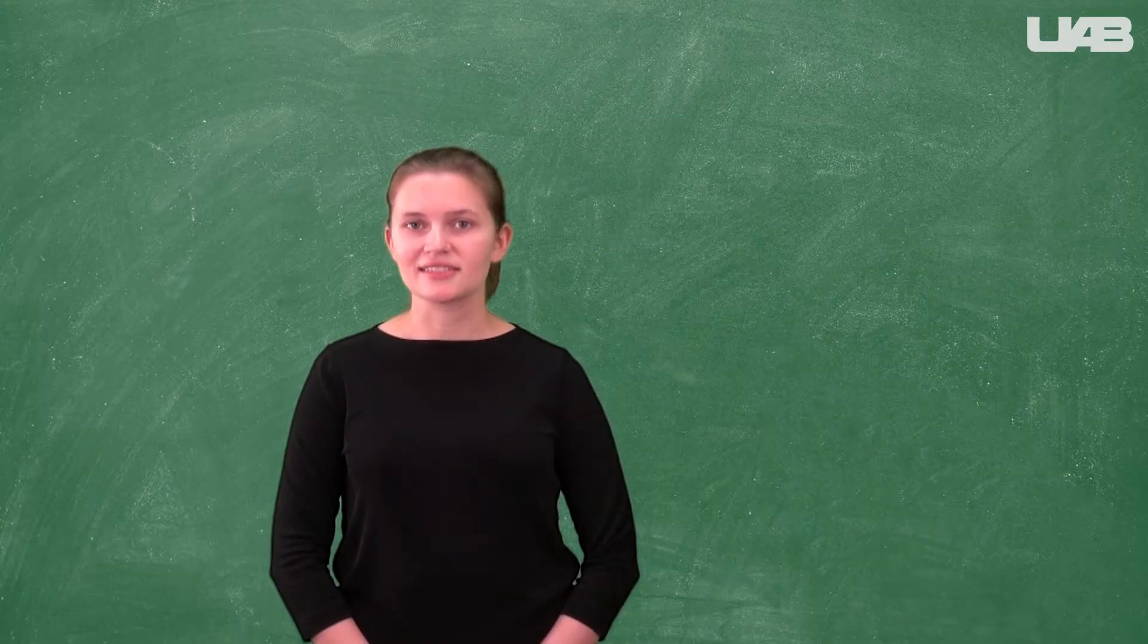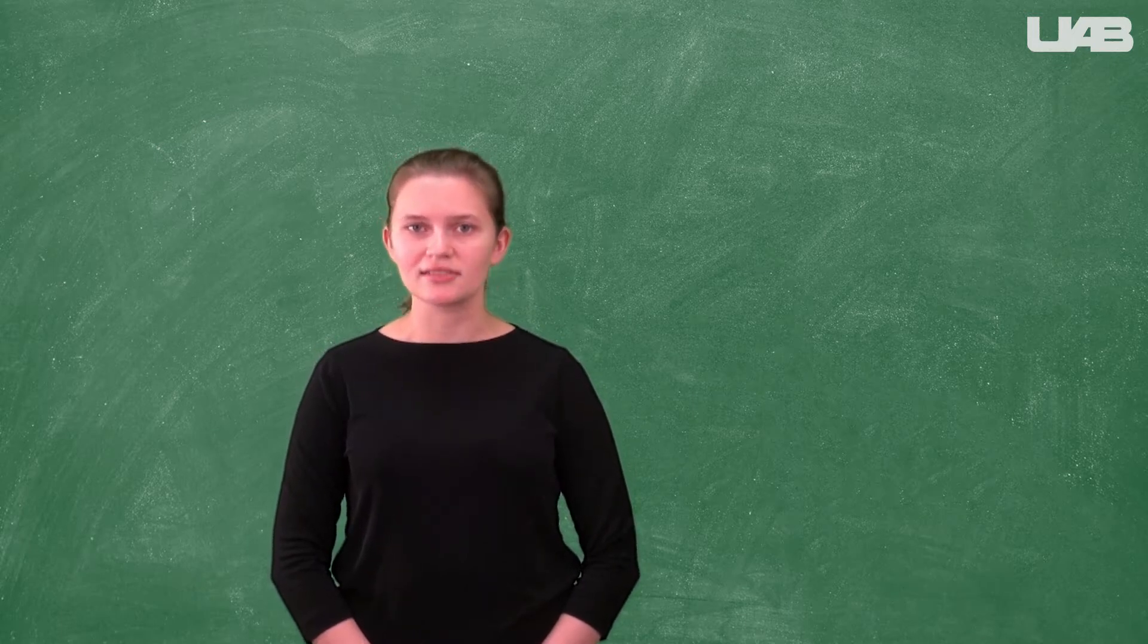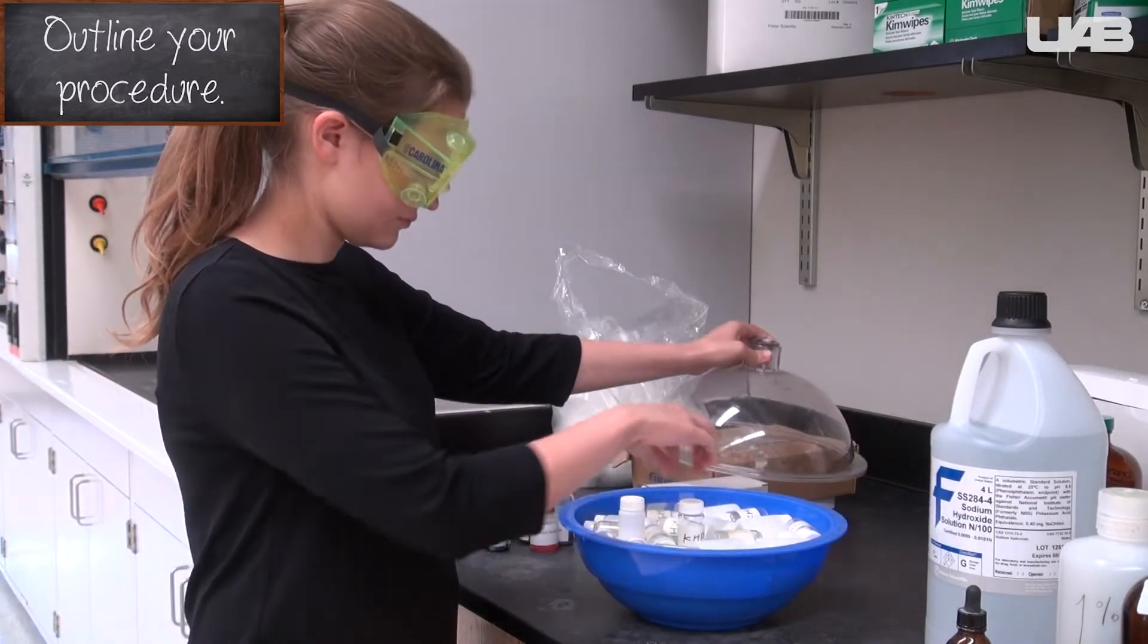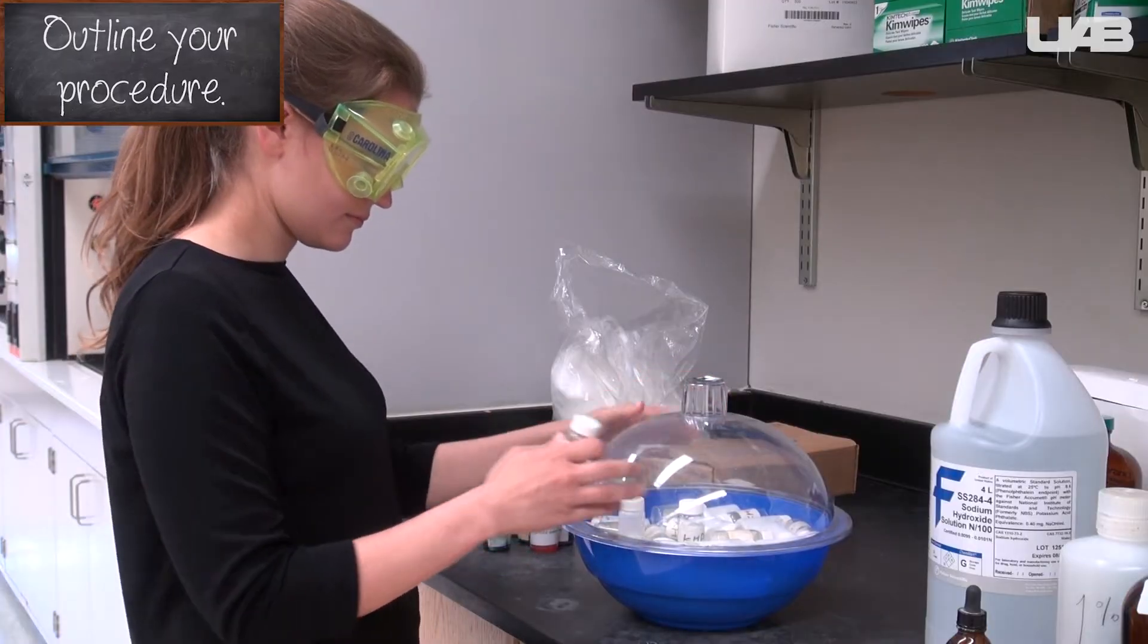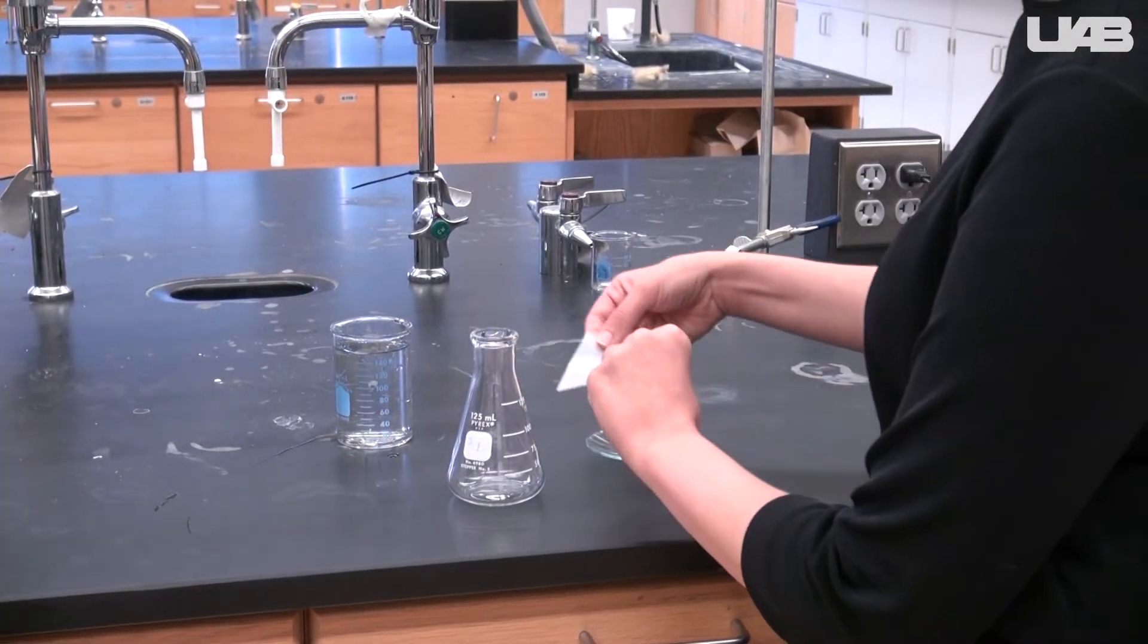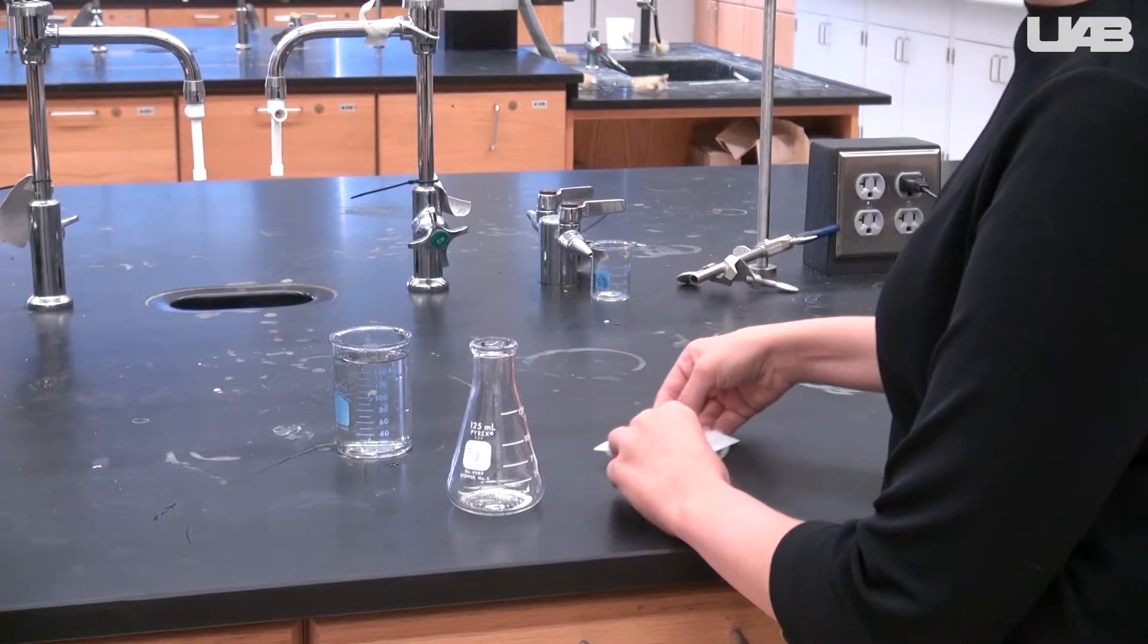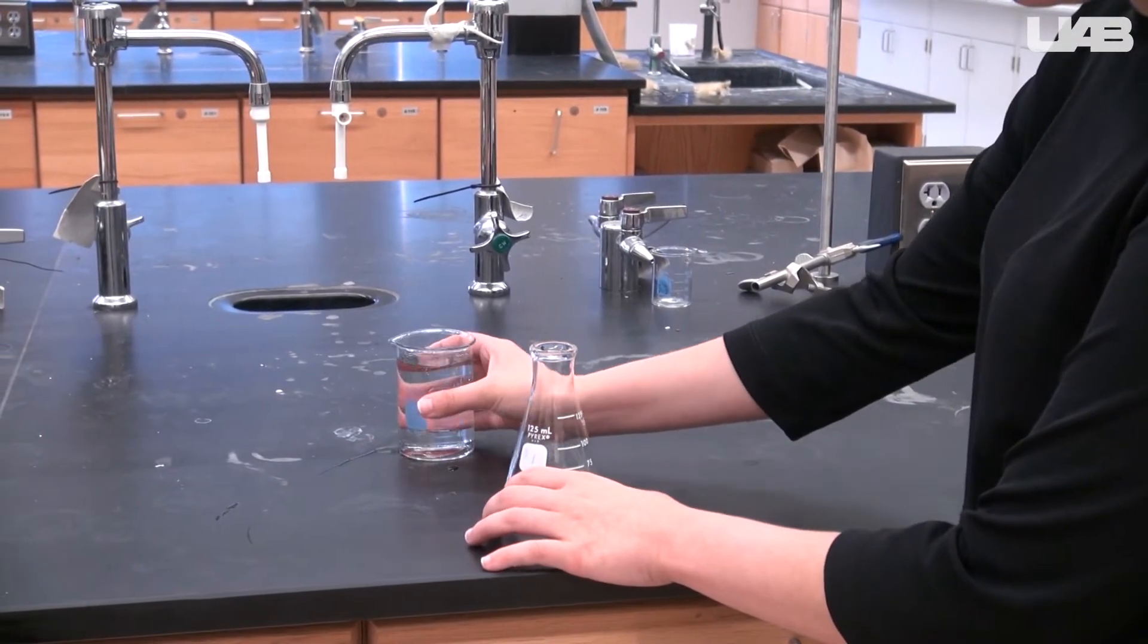While one person is setting up the burette, another can be preparing the KHP solutions that will be used to standardize the sodium hydroxide solution. KHP is kept in the desiccator with the blue base. Take a bottle of KHP and replace the lid. Find the mass of a portion of KHP and record it in your notebook. Transfer the sample to an Erlenmeyer flask. One of the calculations in the In Your Notebook section will tell you about how much KHP you should use.